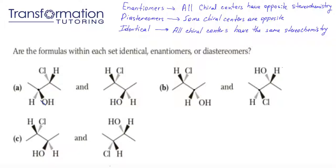So let's take a look. Here we have hydrogen, oxygen, carbon, and carbon. Hydrogen has the smallest atomic number, we give it a four. Oxygen has the highest atomic number, we give it a one. Now, carbon and carbon — no difference — but notice that the carbon on the left is only connected to hydrogens, while the carbon on the right is connected to a chlorine and another carbon. So it's going to win the battle, we give it a two, and we give this carbon a three.